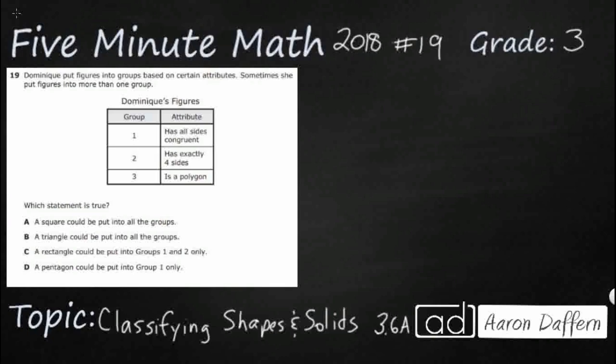So it says that Dominique put figures into groups based on certain attributes. That's going to be a key word for us. Sometimes she put figures into more than one group. So you see we've got this word repeated down here again. So attributes are descriptions. So let's put the word description here. They are descriptions of certain shapes that are true for them.